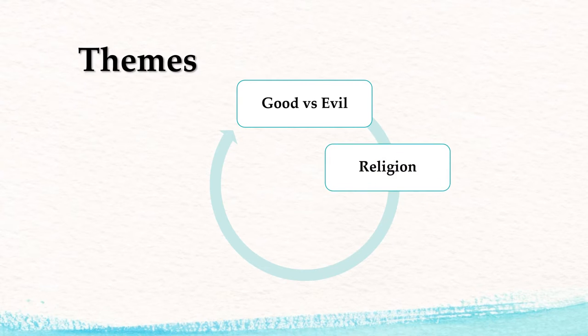The next theme is religion. Christabel is a God fearing, God believing girl who is virtuous. The whole poem is replete with references to Virgin Mary and Jesus Christ and the guardian spirit and the guardian spirit of Christabel's mother. So religion is an important aspect of the poem.